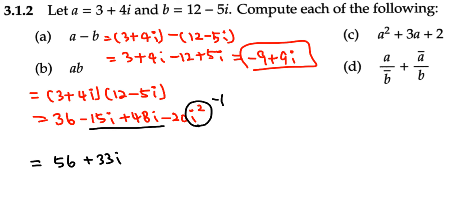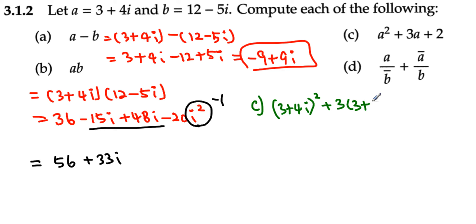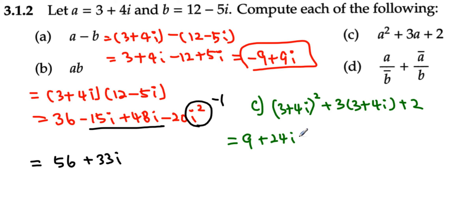For part c, we substitute a = 3 plus 4i into the expression: (3 plus 4i)² plus 3(3 plus 4i) plus 2. Since (3 plus 4i)² is a perfect square, we get 9 plus 24i plus 16i². Then distributing the 3 gives plus 9 plus 12i, and plus 2.